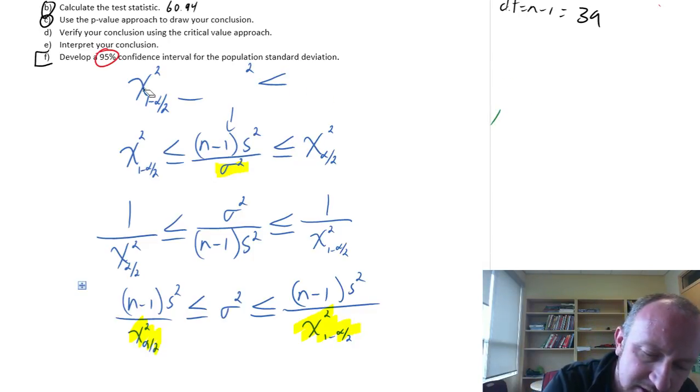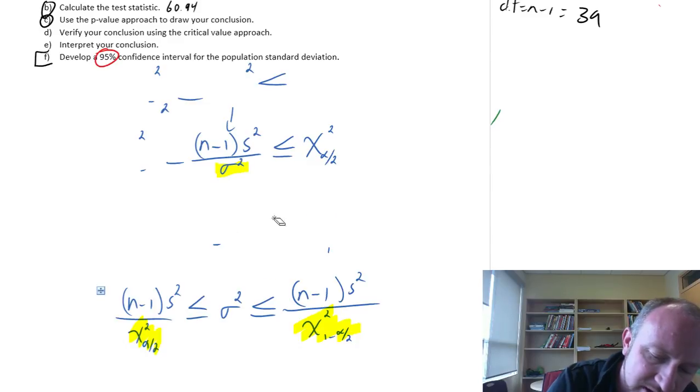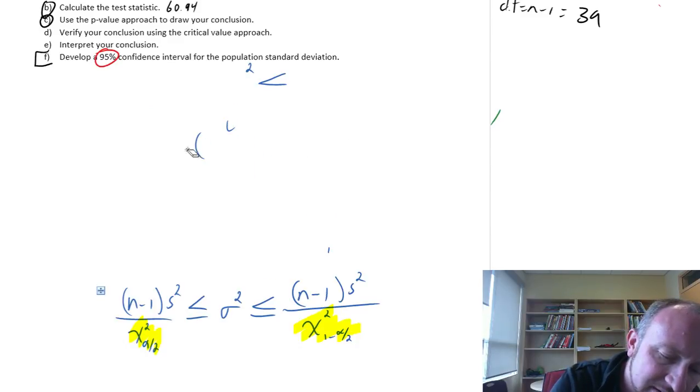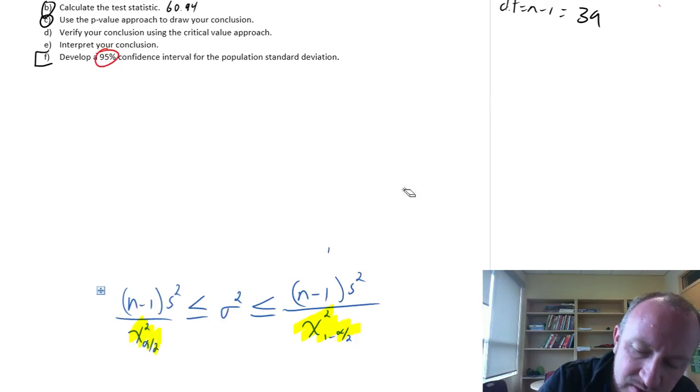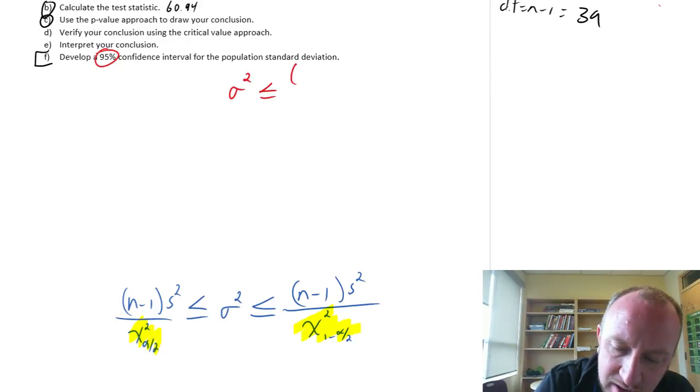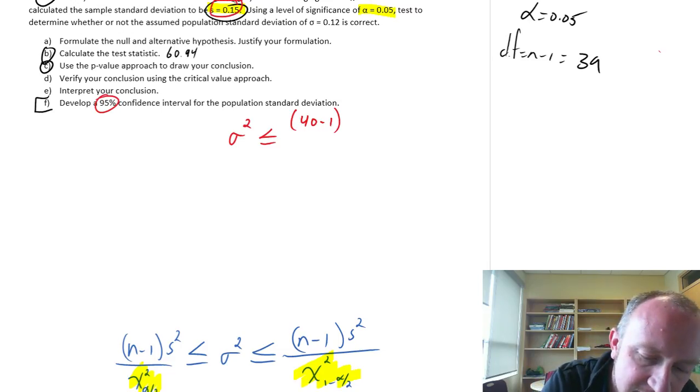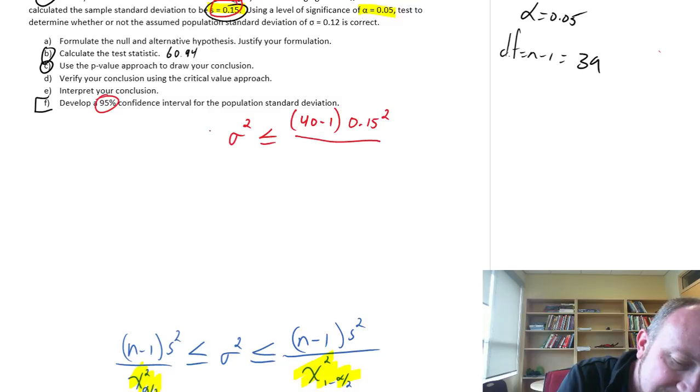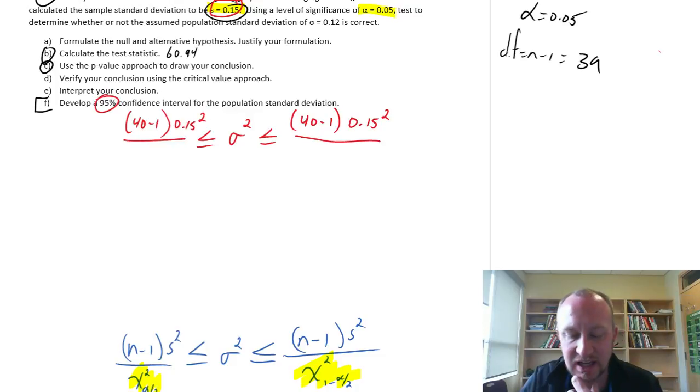I'm going to erase this stuff at the top. We'll keep the formula down below and just fill in our blanks here. My unknown value, sigma squared, is something less than or equal to n minus 1, which was 40 minus 1. Our sample standard deviation was right here, 0.15 squared. Let's come back to that critical value. Down here is the same, 40 minus 1 times 0.15 squared. Now I need that other critical value.